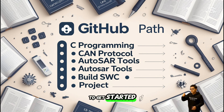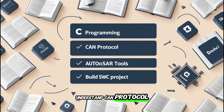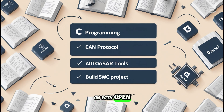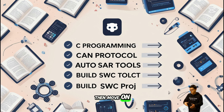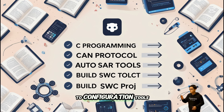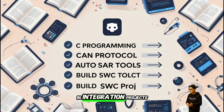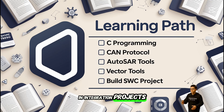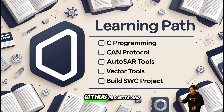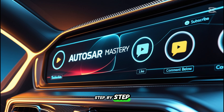To get started, learn basic embedded C, understand the CAN protocol, and get hands-on with open-source tools like Arctic Core. Then move on to configuration tools and try building your own SWCs and integration projects. Plenty of free courses, GitHub projects, and YouTube tutorials can guide you step-by-step.